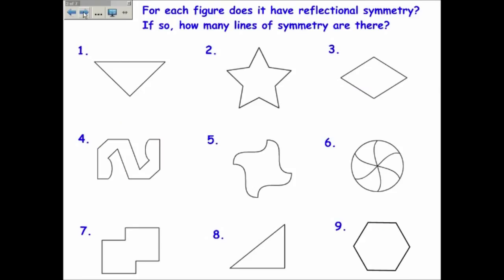Here are several examples where we ask: does the figure have reflexional symmetry, and if so, how many lines are there? In number one, there's only one line of symmetry. Any other line wouldn't match up correctly if we reflected it across that line. So there's one line of symmetry in number one.